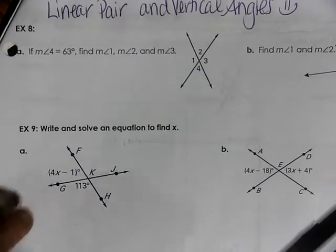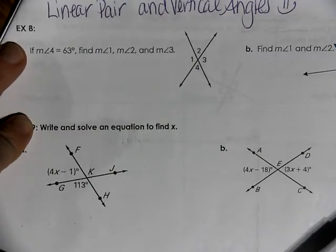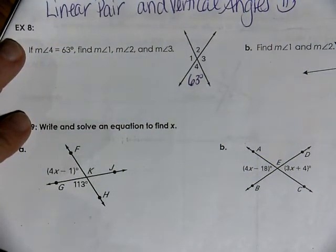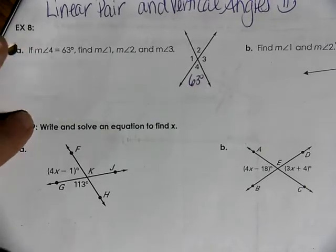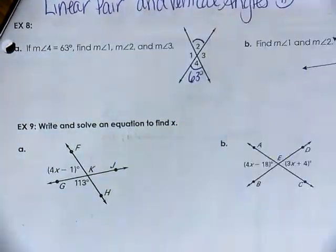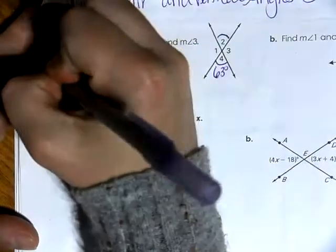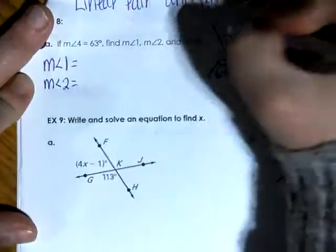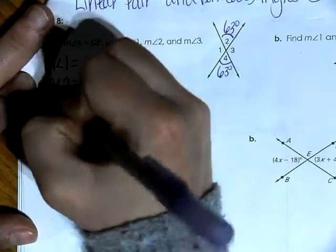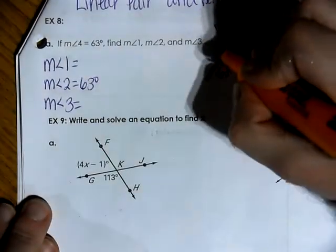So we're going to use those definitions of linear pair and vertical angles to help us answer the following questions. If the measure of angle four is 63 degrees, I'm going to mark up 63 degrees. We want to find the measure of angle one, measure of angle two, and the measure of angle three. I always recommend identifying the vertical angles first. So I know that angle two and angle four are congruent to each other. The measure of angle two is equal to 63 degrees because of vertical angles. But I don't know what the measure of angle three is yet — there exists a line right here.